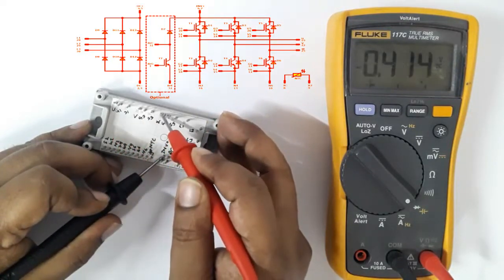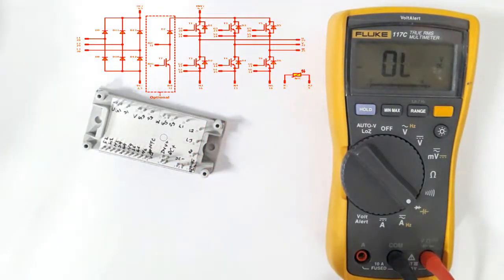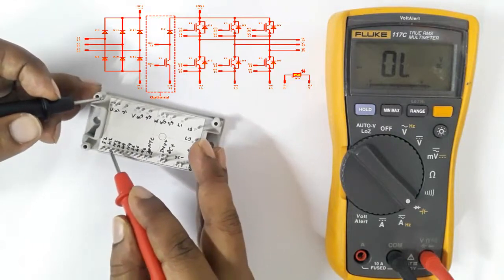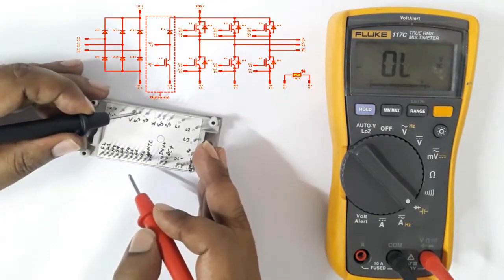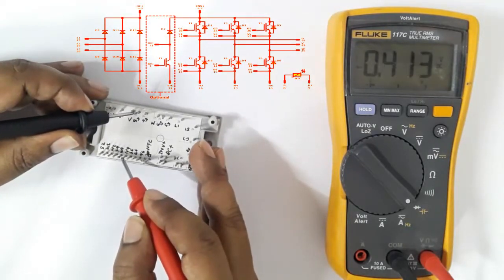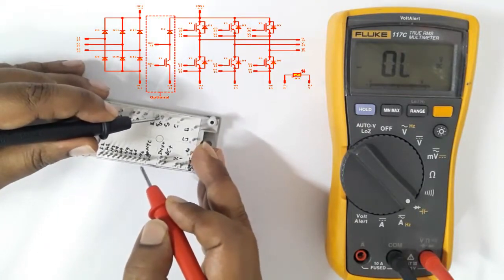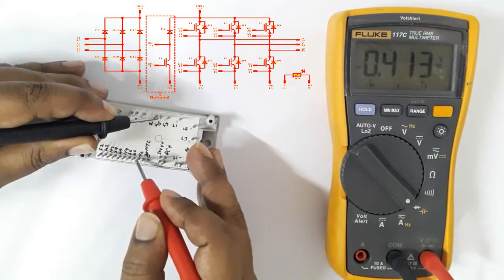V and W also about 0.4 volts DC. Now testing the negative terminal. For U terminal, the negative terminal is here, set red probe. For terminal V, negative terminal is N4. For terminal W, negative terminal is N6. All about 0.4 volts DC.